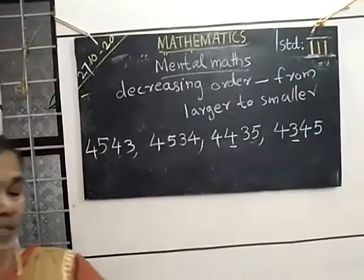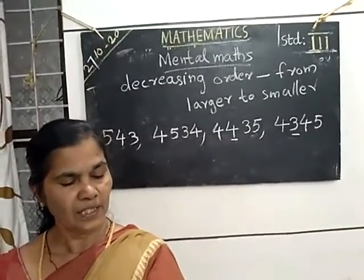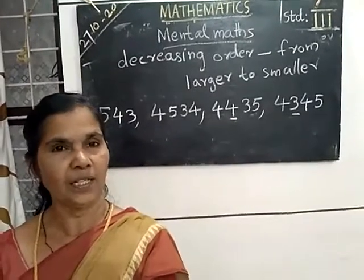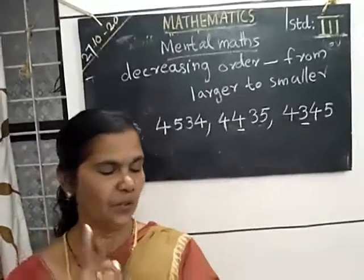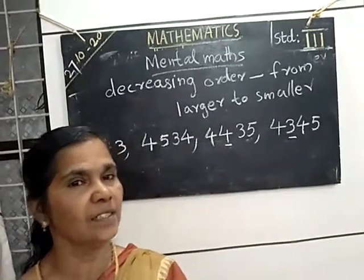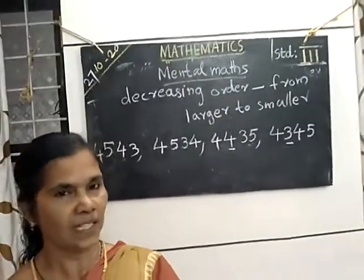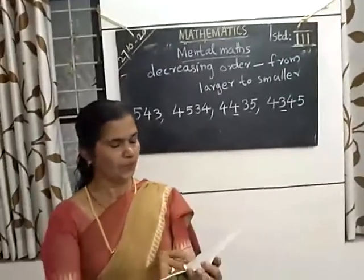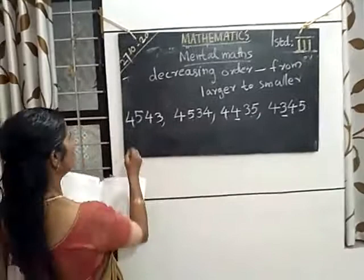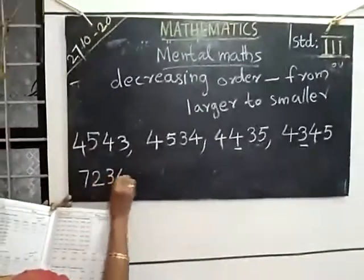Next set: 3,247; 2,347; 3,427; 7,234. You look at the thousands place — which is the largest digit there? 7. So 7 is the largest in the thousands place. We start from 7,234.